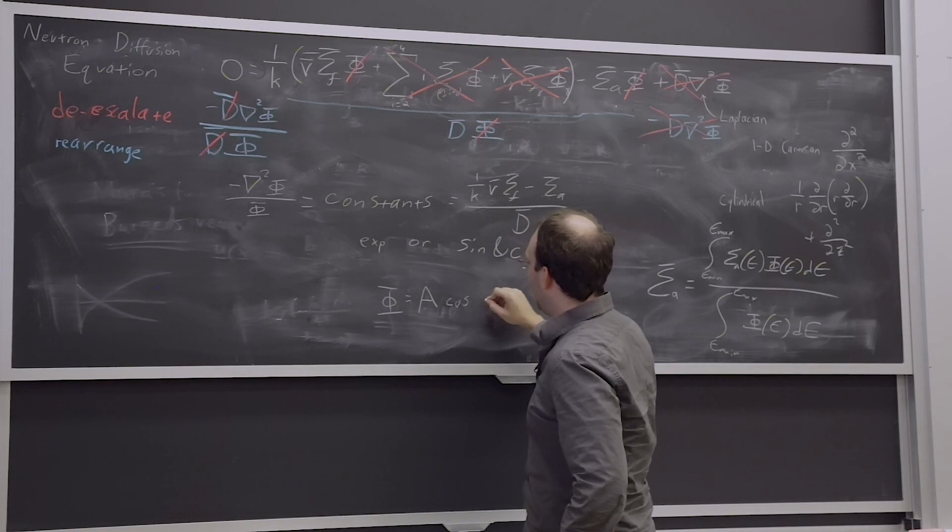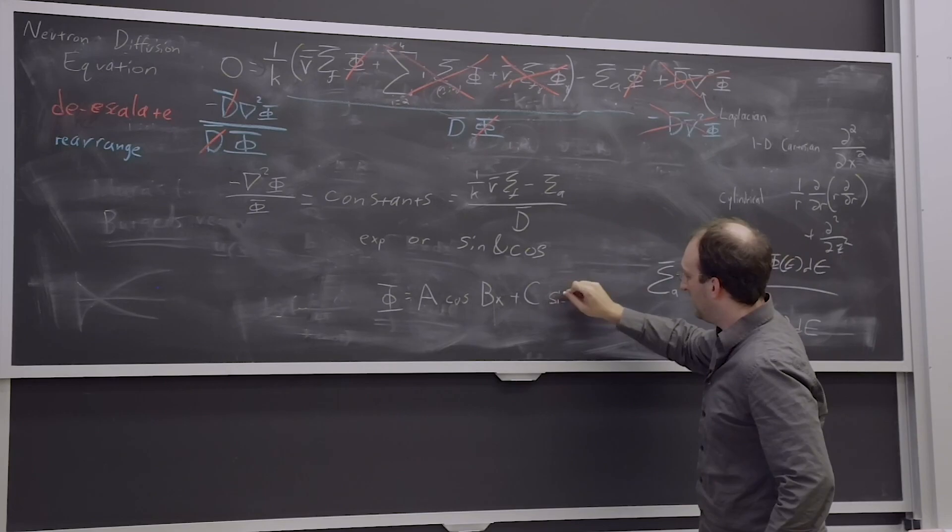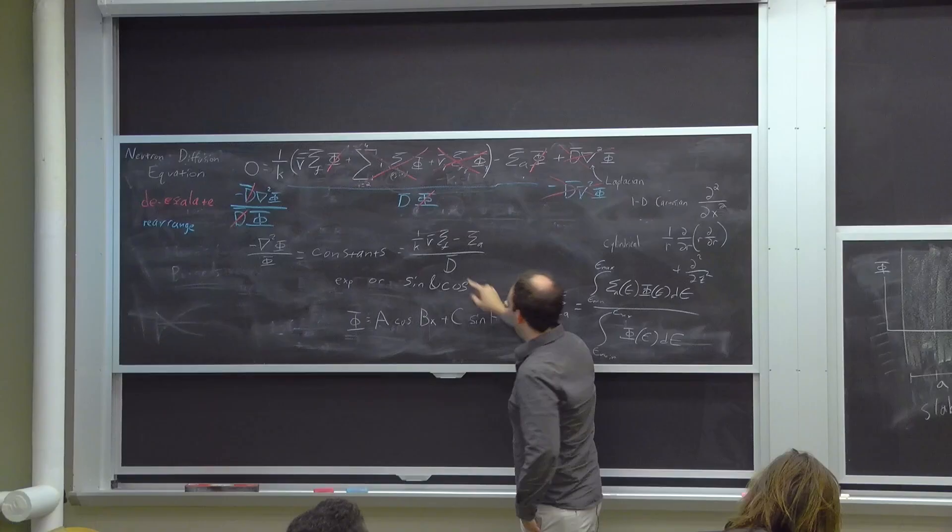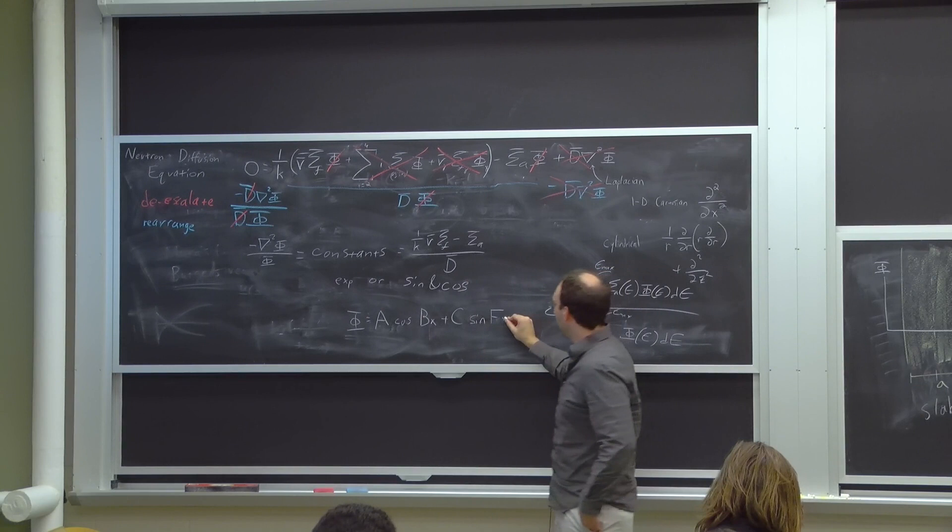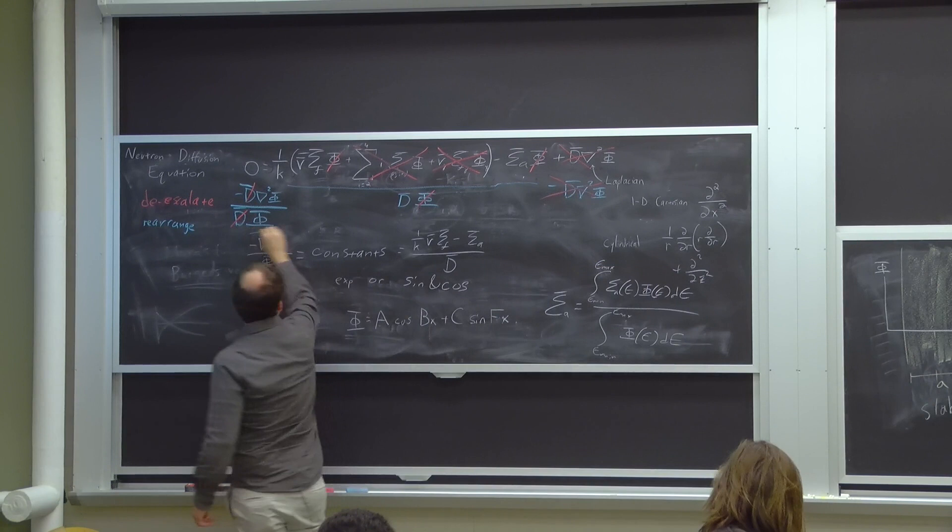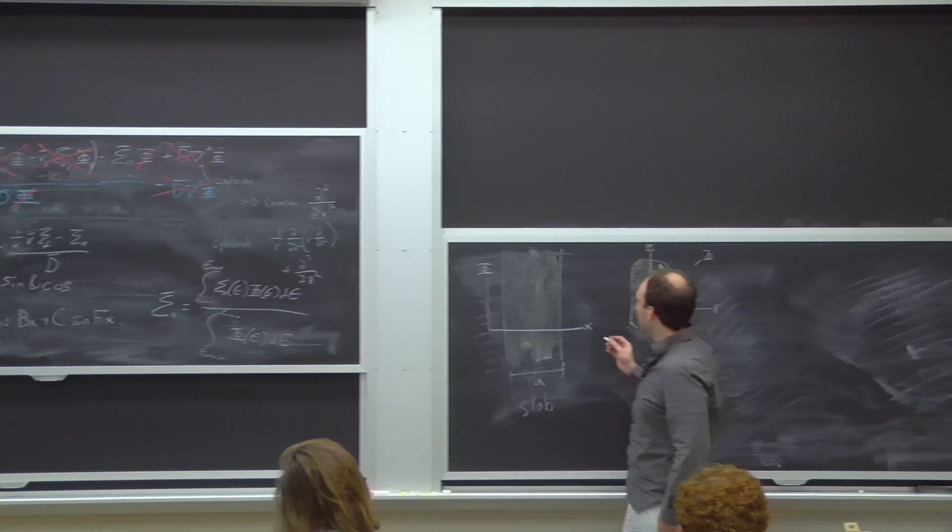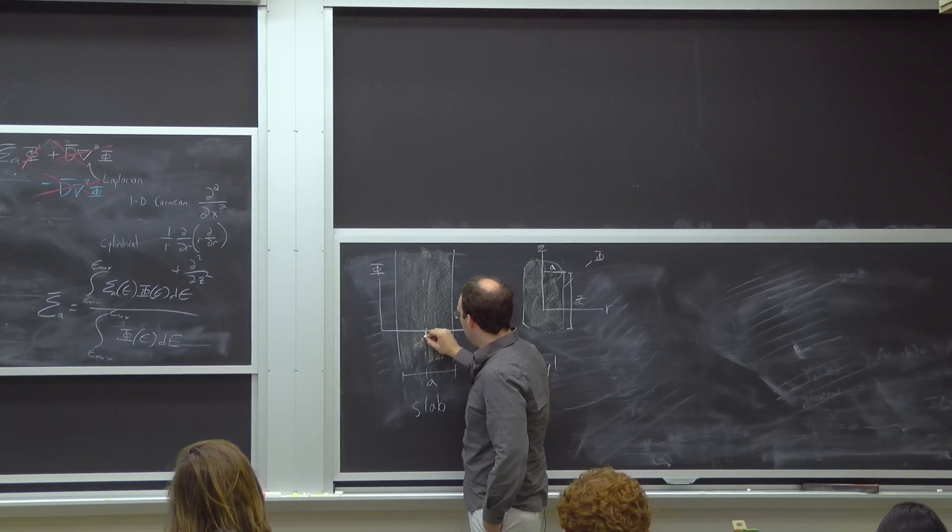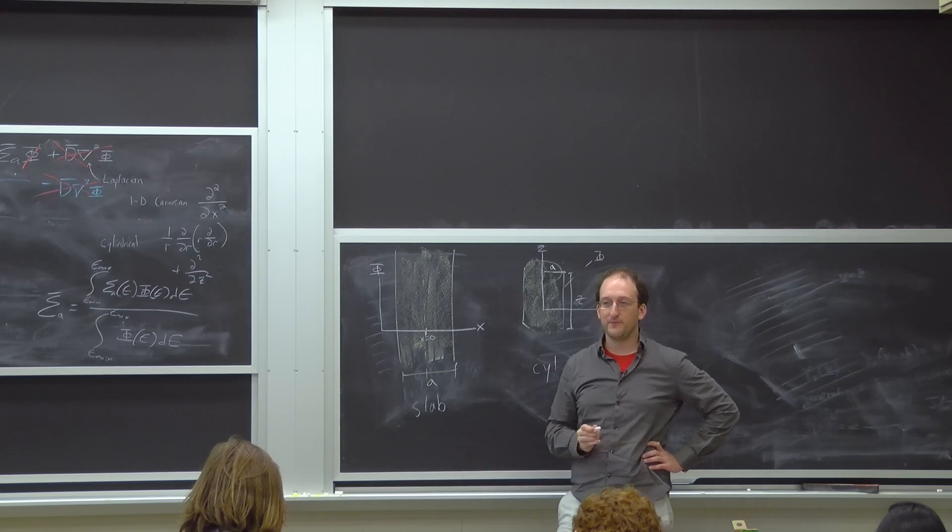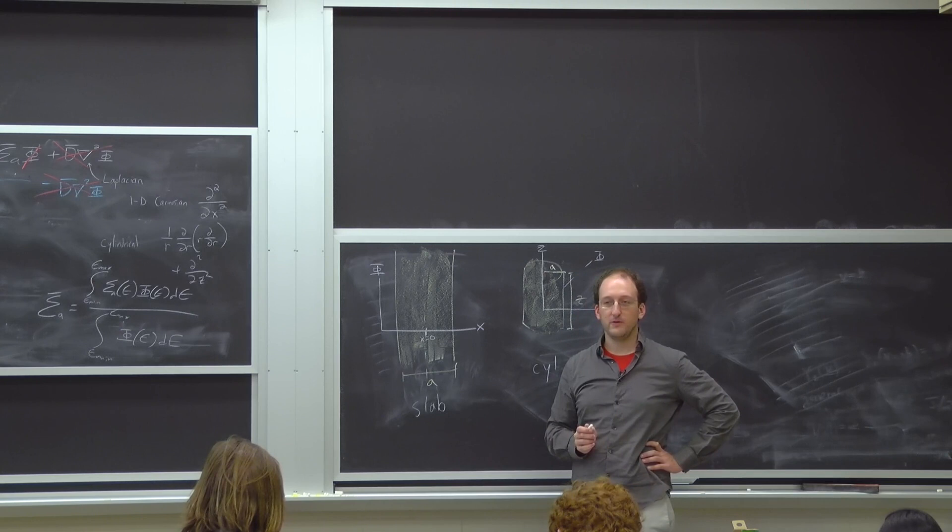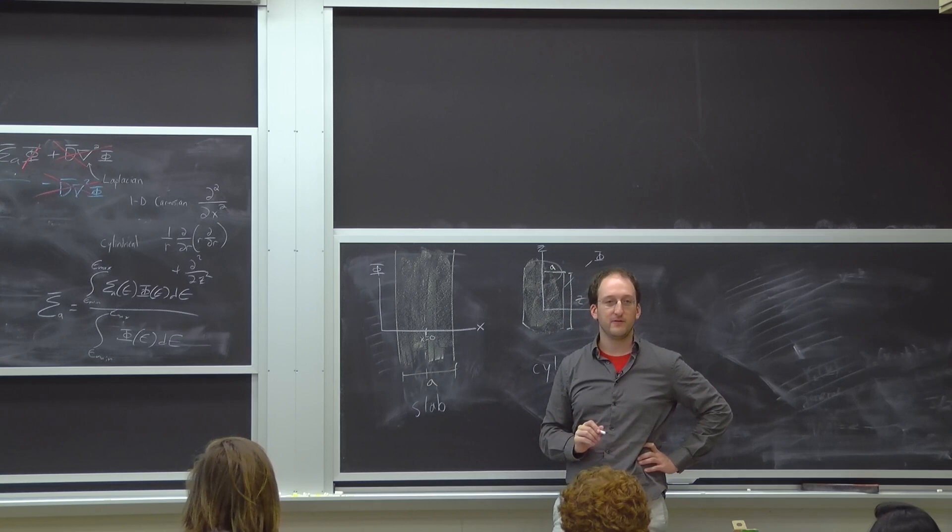We're left with something awfully simple. Minus del squared flux over flux equals constants. It would be 1 over k times nu sigma fission minus sigma absorption over d. Everyone remember why we're putting these bars on the cross sections? We've averaged over all energy. Some average cross section would be the average from our minimum to our maximum energy of that cross section as a function of energy times flux.